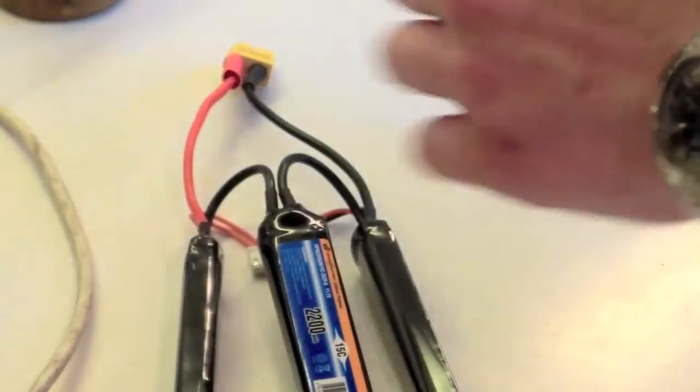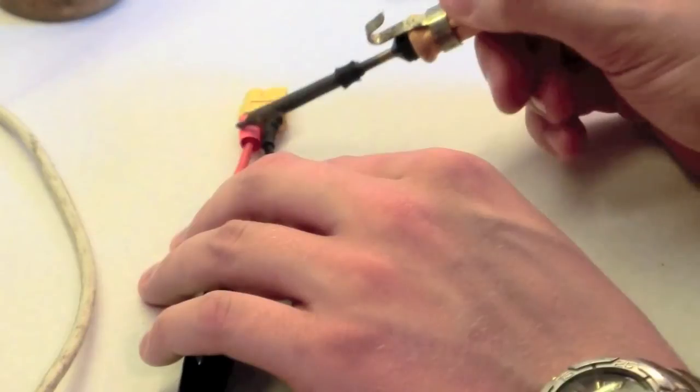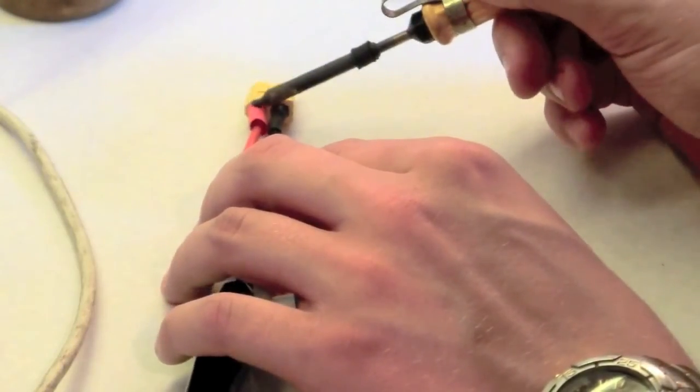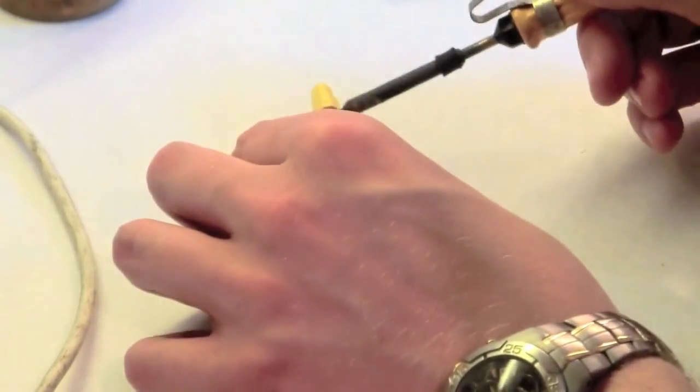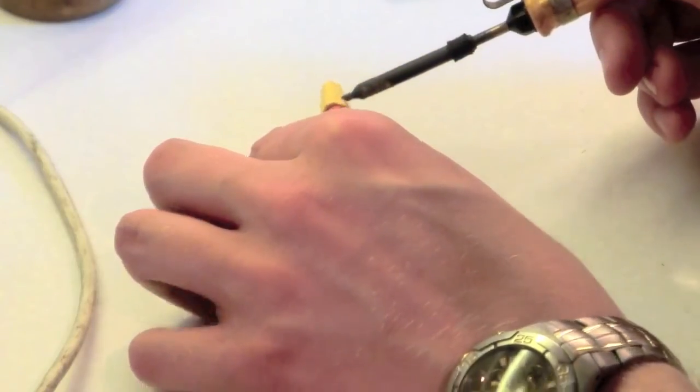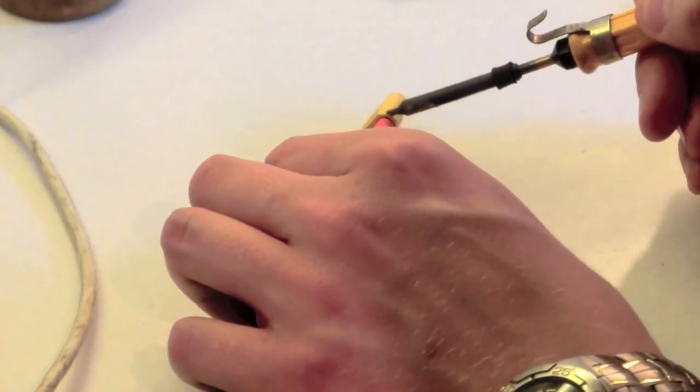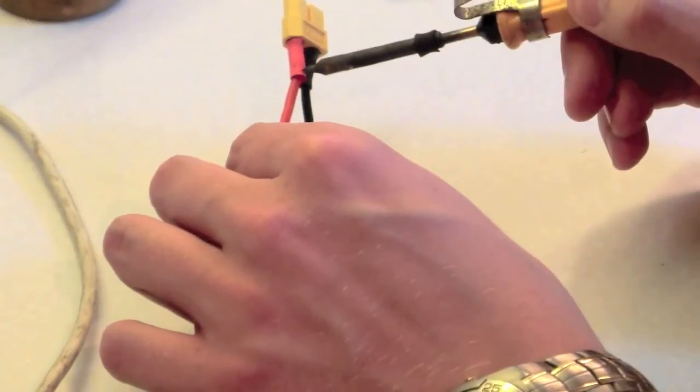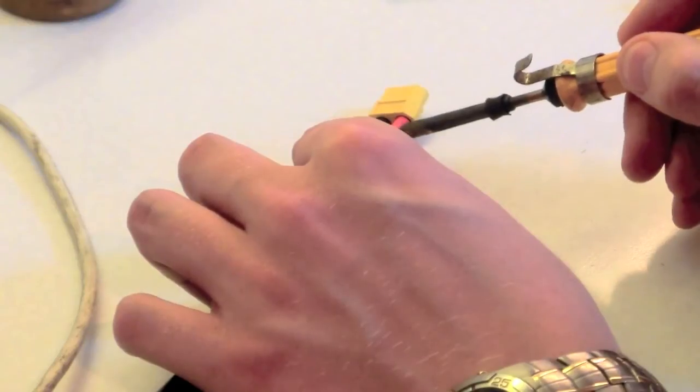Right, now just give that heat shrink a little hand. And another advantage of using some kind of clamp whilst doing this is that it helps you to stop from burning your hands, even just on the outside of the connectors.